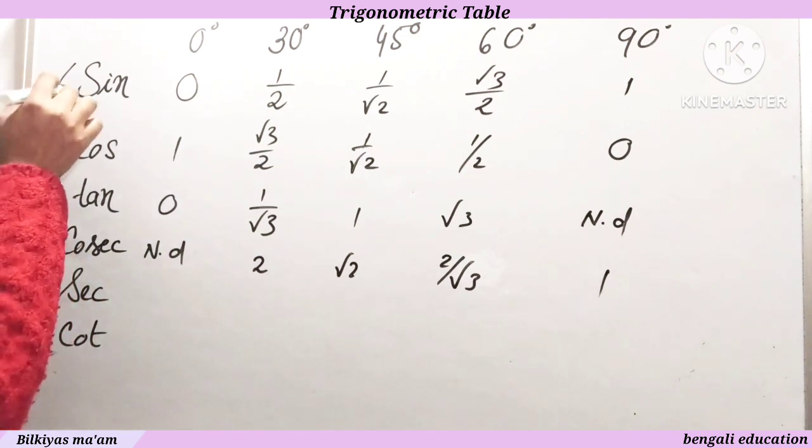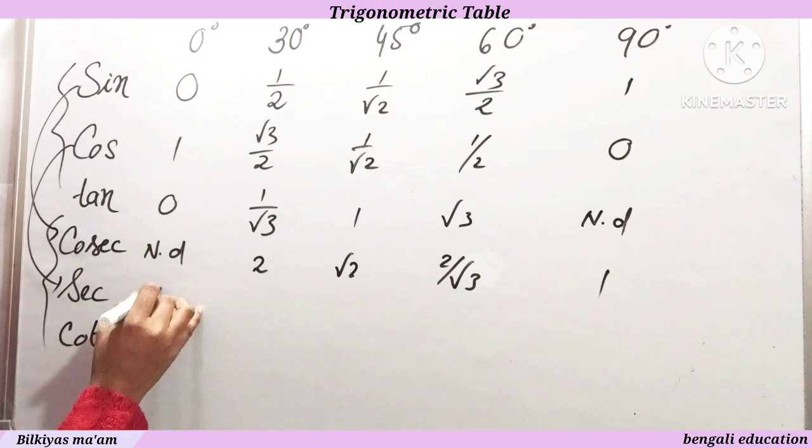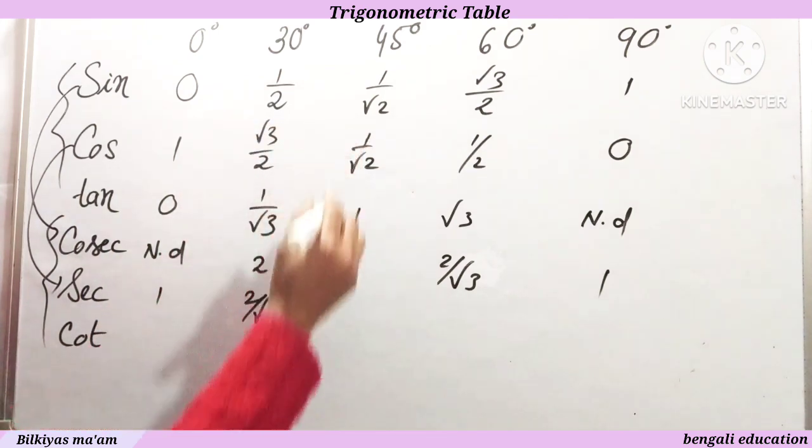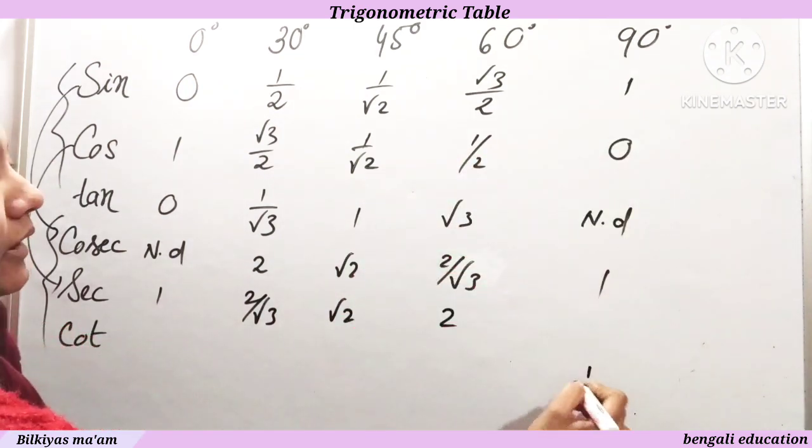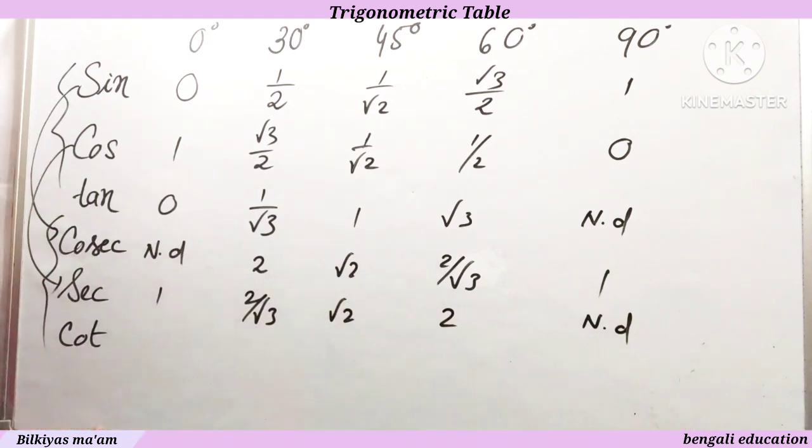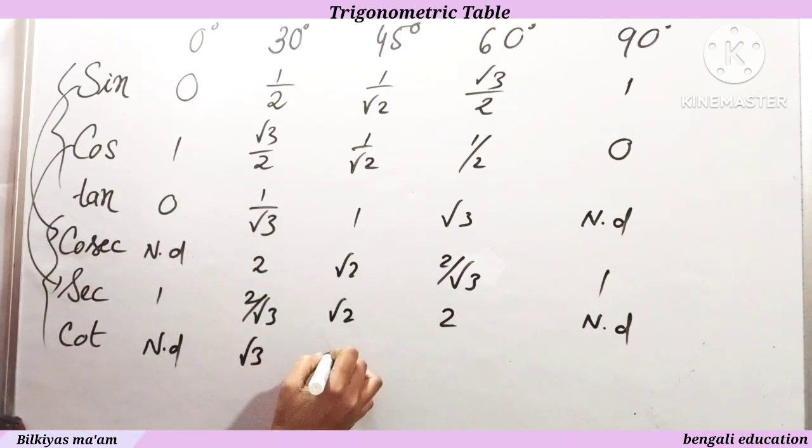Sec is the reciprocal of cos. 1 upon 1 is 1, 1 upon root 3 by 2 is 2 upon root 3, 1 upon 1 upon root 2 is root 2, 1 upon half is 2, and 1 by 0 is not defined. So the value is 1, 2 upon root 3, root 2, 2, and not defined.